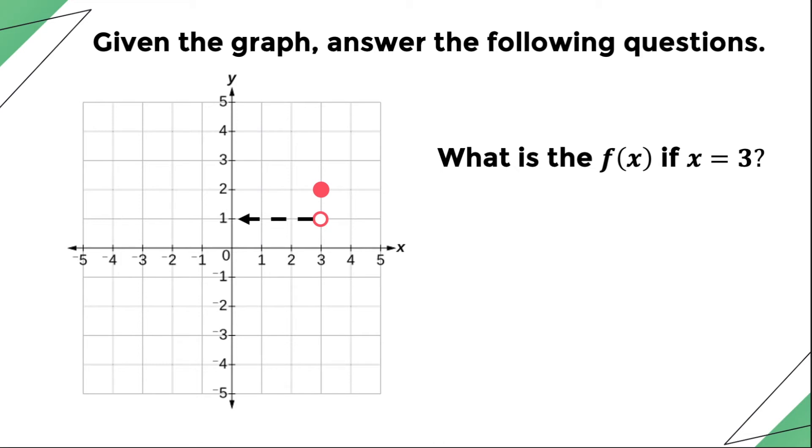Therefore, it means that (3, 1) is not part of the graph. However, since there is a solid circle that y is equal to 2 whenever x is equal to 3, the point (3, 2) exists. Therefore, the value of f(3) is equal to 2.